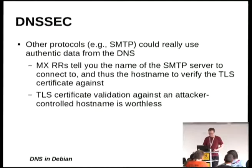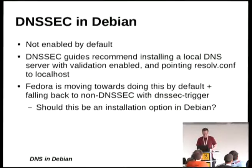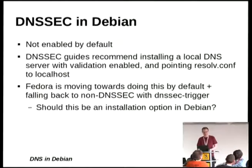Postfix is really gung-ho on DNSSEC if you look at the latest versions — they've got significant new functionality if you look at the TLS documentation for postfix. If you look specifically at DNSSEC and Debian, we're using this old glibc stub resolver from the 90s. It's been maintained since then, but it hasn't seen an overhaul that would allow it to easily support DNSSEC.